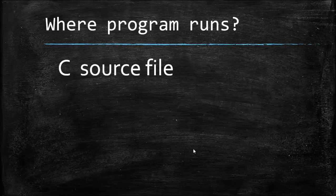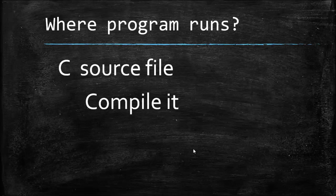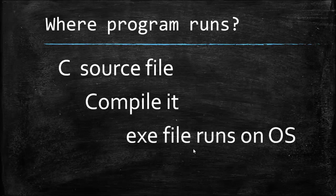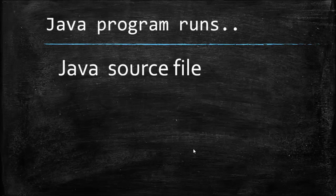Let's understand where our program runs. For example, if it's a C program and you want to run it, you compile the C program. Once you compile it with no errors, you get an executable file. That .exe file runs directly on the operating system — there is no environment involved. This is the concept of platform dependency: this .exe file will run on Windows but will not run on Linux.